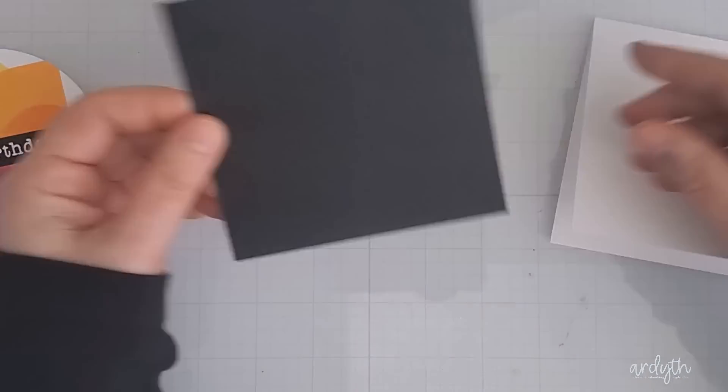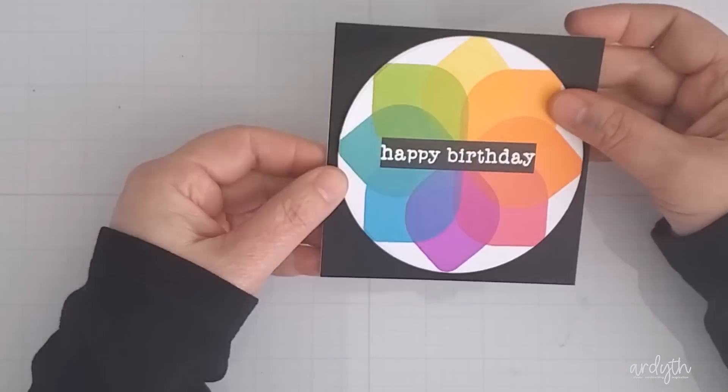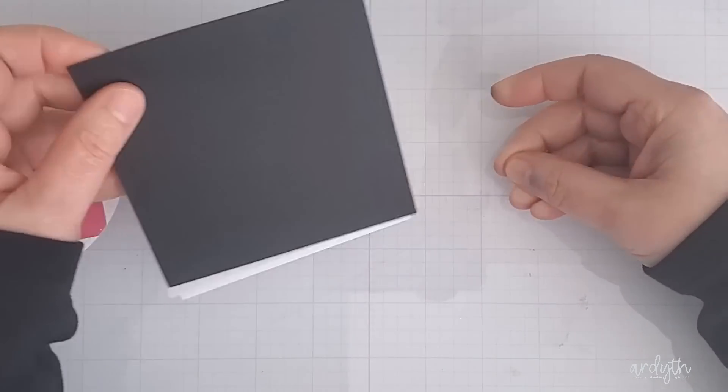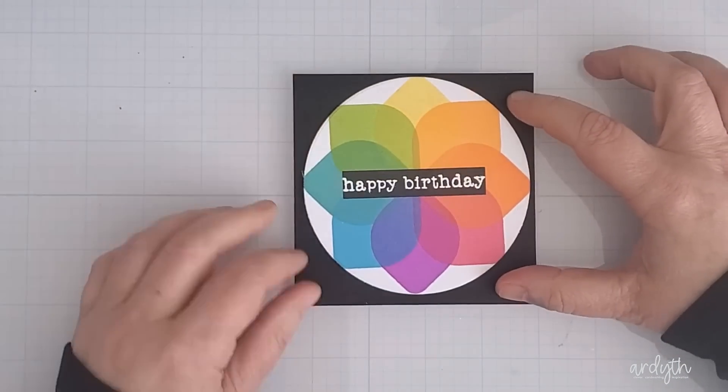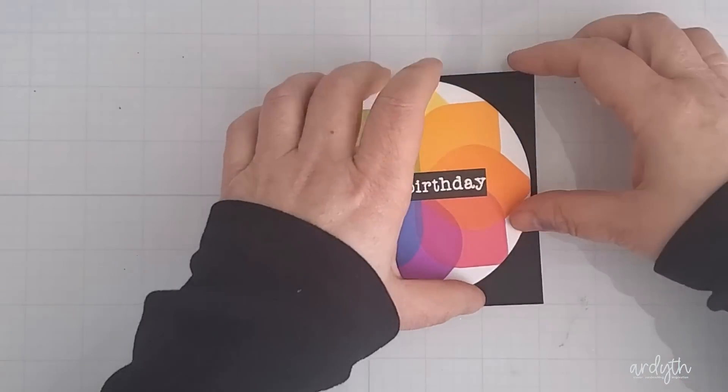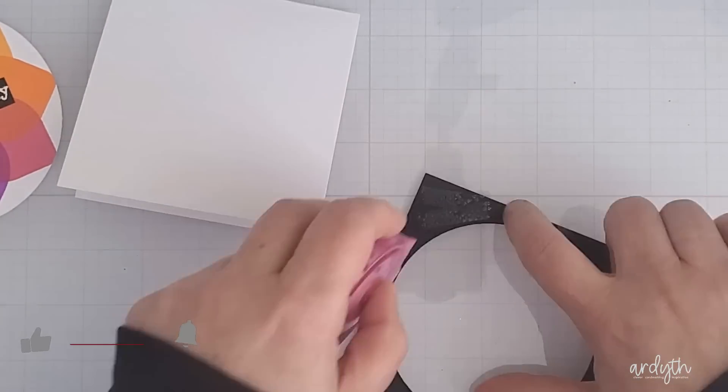When I make rainbow cards I do like to have a pop of black and this time I also want my full front panel to be black. Instead of making a full black card base I tend to just put a panel of black onto a white card base and that way I can write easily on the inside without needing a special pen or having to add a panel of white card stock inside.